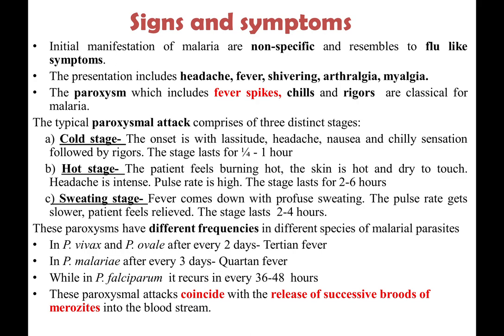This sequence of three stages keeps on repeating every two days — this is Tertian fever, caused by Vivax and Ovale species. It repeats after every three days in Quartan fever, caused by Plasmodium malariae, and recurs every 36 to 48 hours with Plasmodium falciparum. These attacks are the consequence of release of a high quantity of merozoites into the bloodstream.